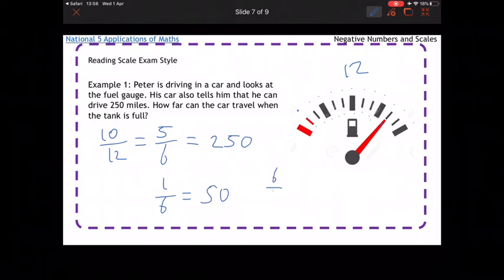And then times it by 6. Or when you've got 6 sixths, or when the tank is full, you're going to have 50 times 6, which is 300 miles. So it can drive 300 miles when it's full.